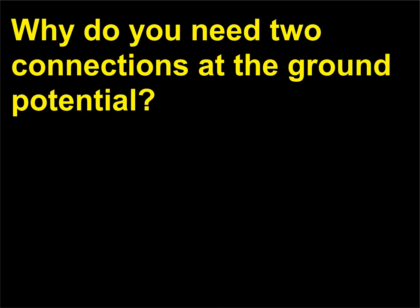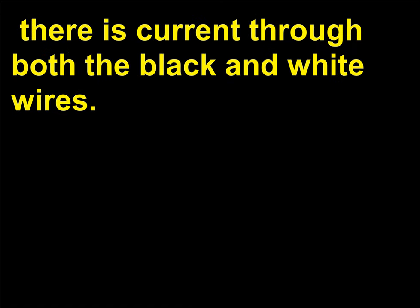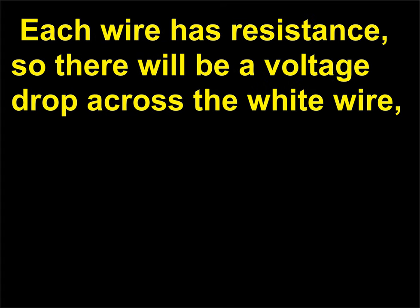Why do you need two connections at ground potential? Because when the appliance plugged in draws current, there is current through both the black and white wires. Each wire has resistance, so there will be a voltage drop across the white wire, and it will be above ground potential at the outlet. While this voltage will be small, it could be dangerous.